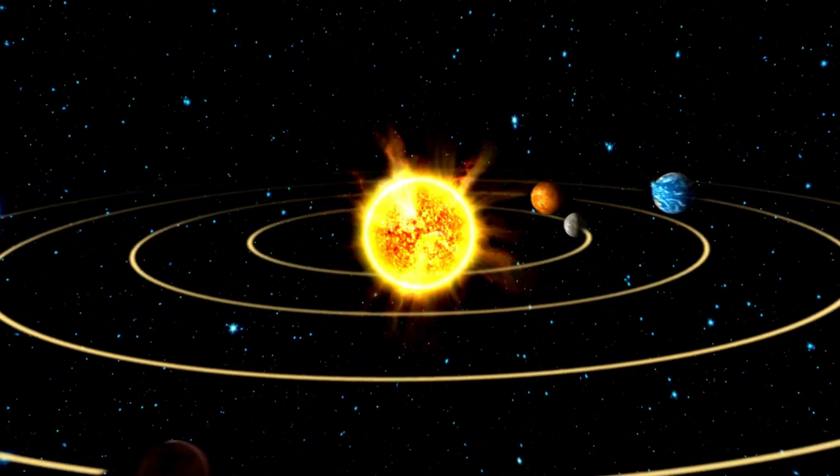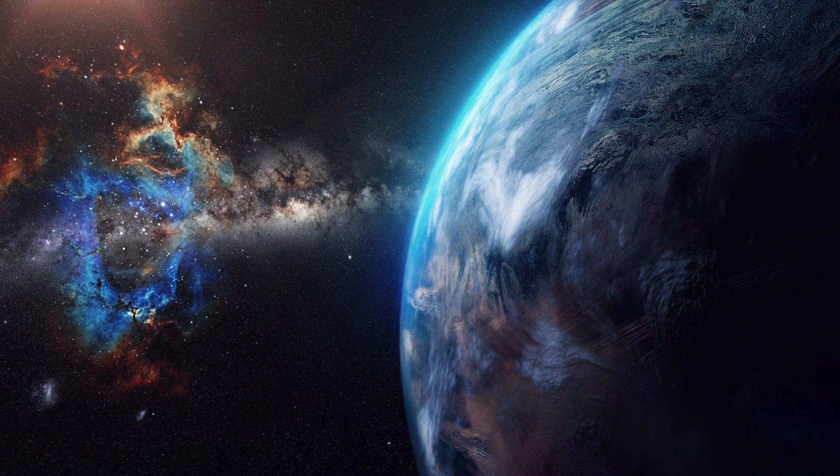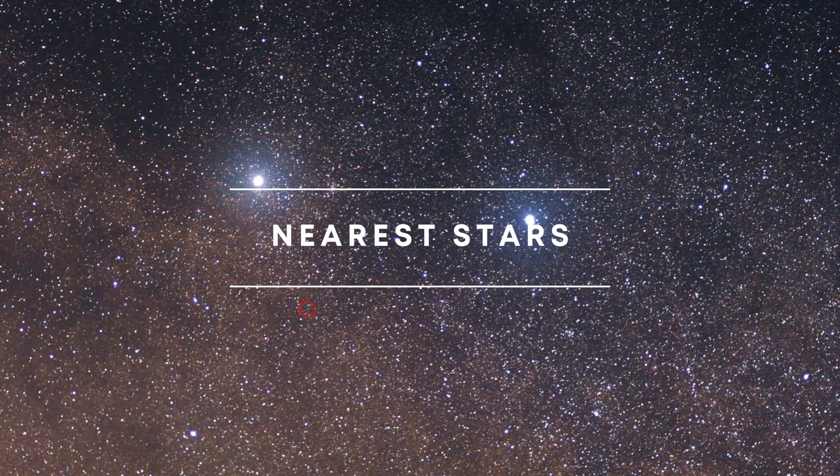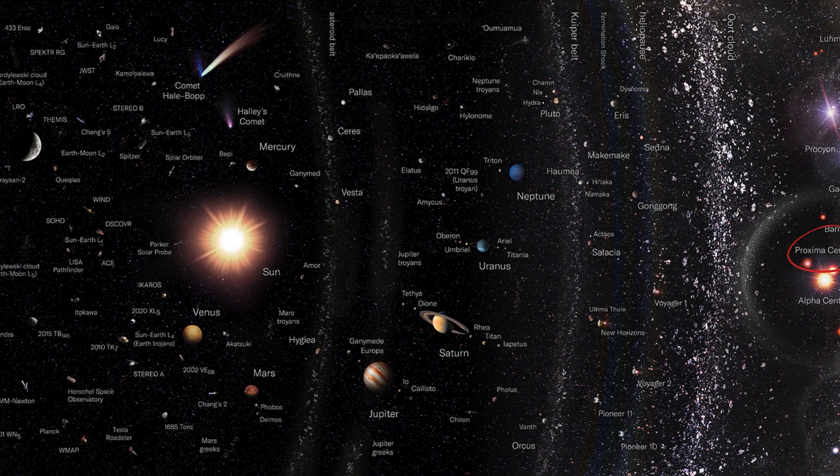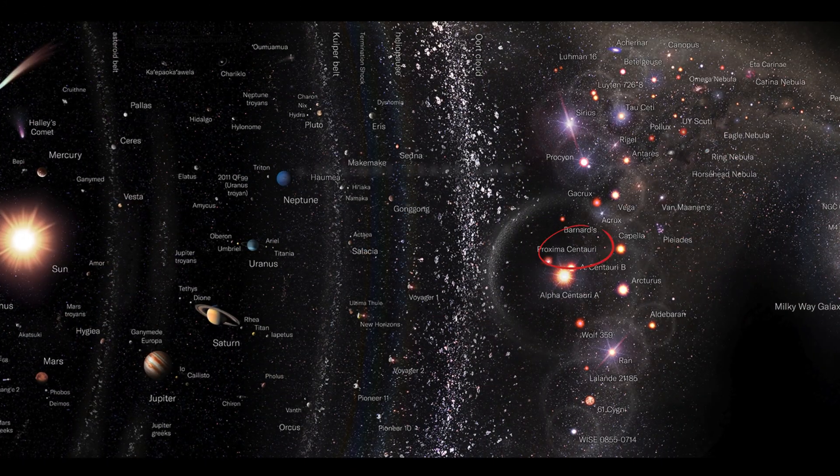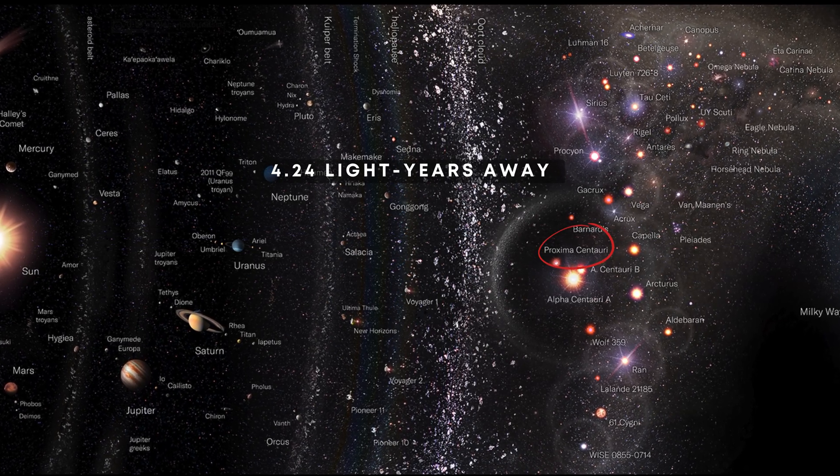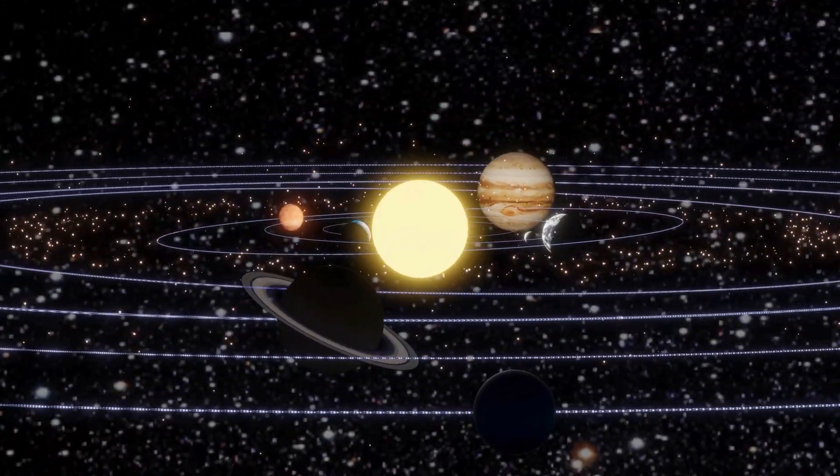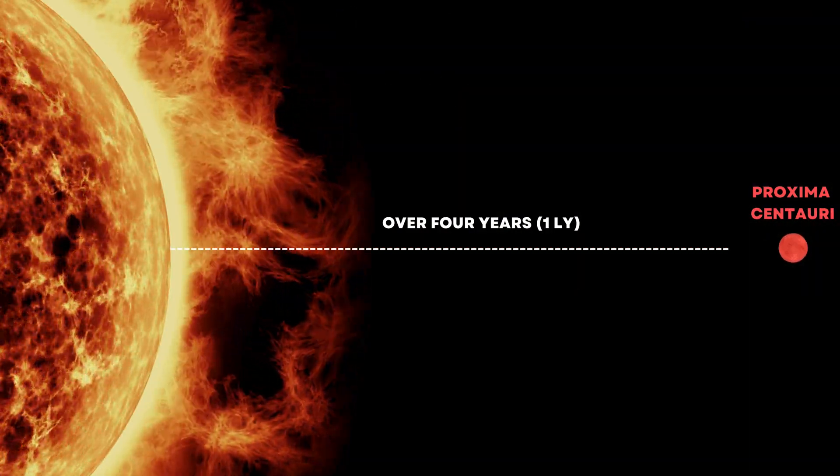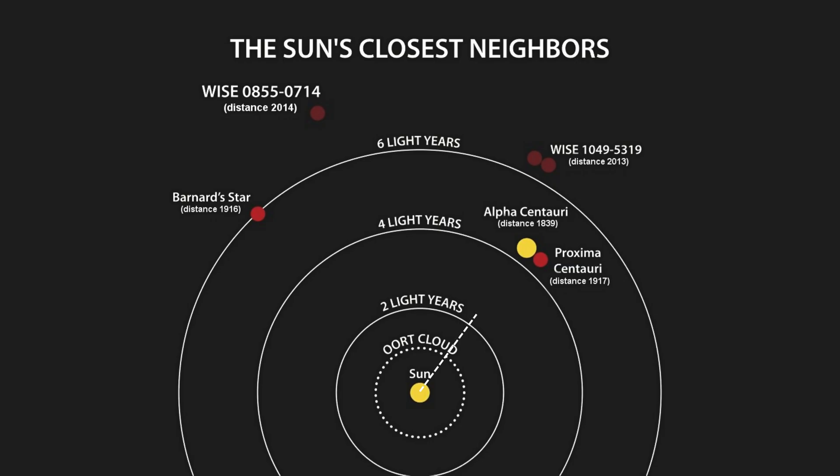Now that we've explored the solar system, let's travel beyond to see what's out there in the wider cosmos. The closest star to our solar system is Proxima Centauri, a red dwarf star, located approximately 4.24 light years from the Alpha Centauri system. It would take over four years to reach at the speed of light. Therefore, reaching Proxima Centauri at this speed is simply impossible.